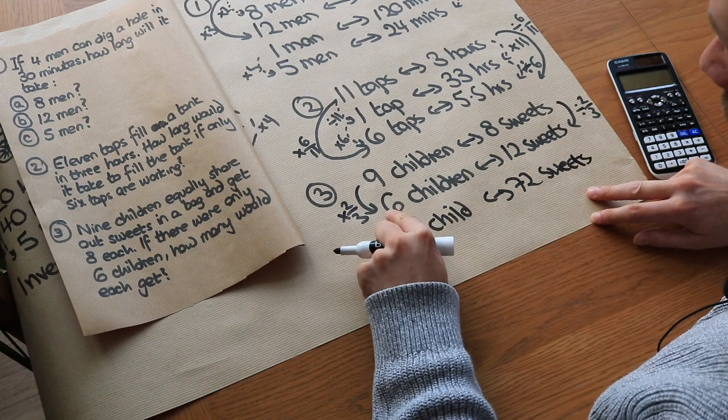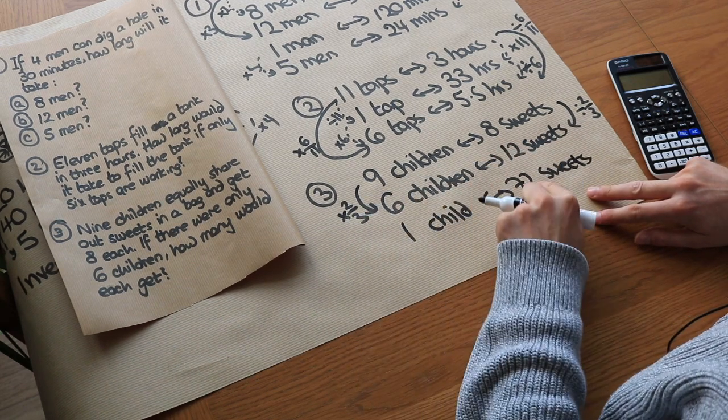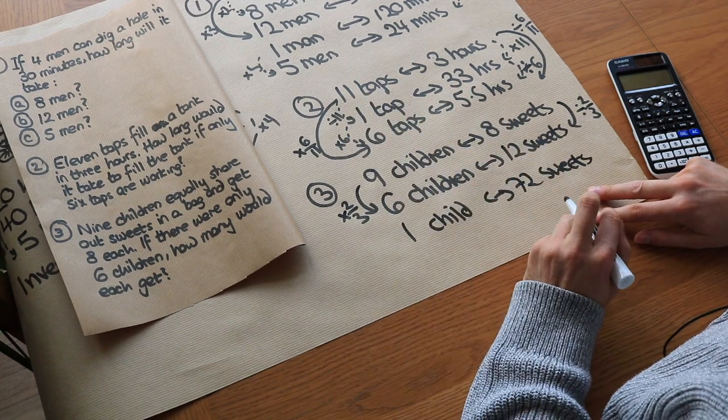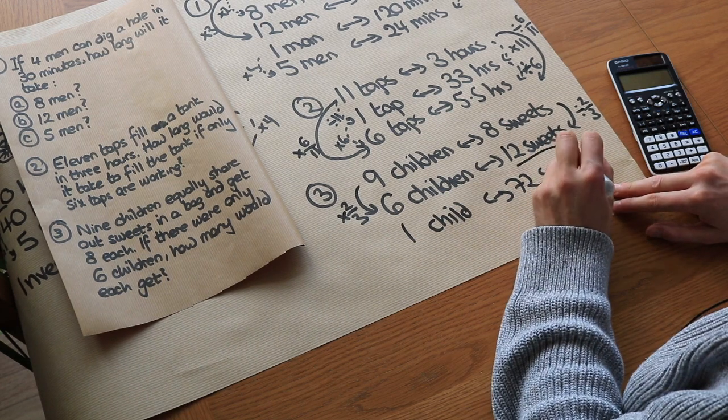Then to get to 6 children, because you're timesing by 6, you divide that by 6, and that would get you the same answer. But the answer is 12 sweets.